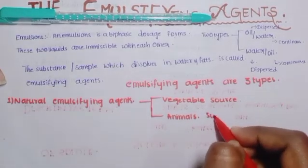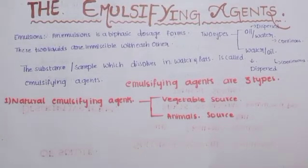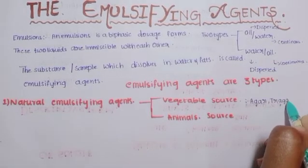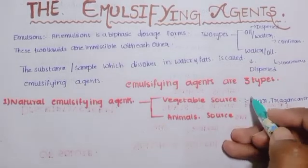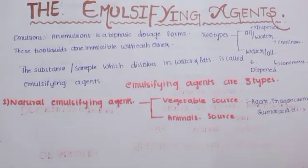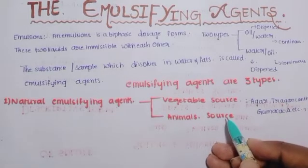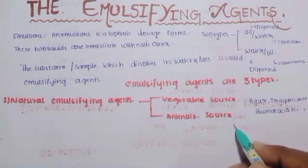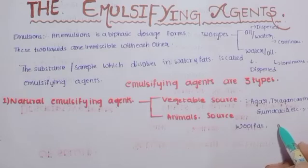From the vegetable source, examples of natural emulsifying agents include agar and gum acacia. From the animal source, the emulsifying agents are mainly wool fat and gelatin.